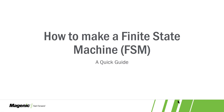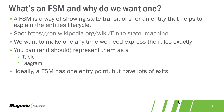Stuart here, and today we're going to talk about how to make a finite state machine. This is a super quick overview. A finite state machine is a way of showing state transitions for an entity. In our example, we're going to be talking about an e-commerce order, and you can read more about finite state machines on Wikipedia.